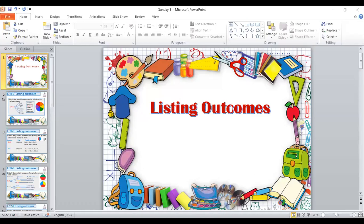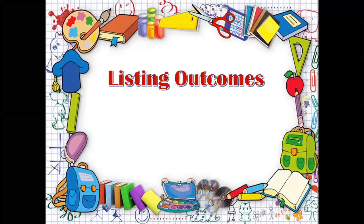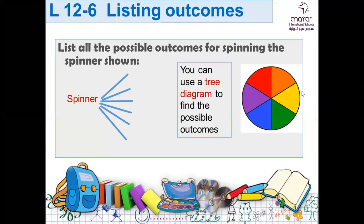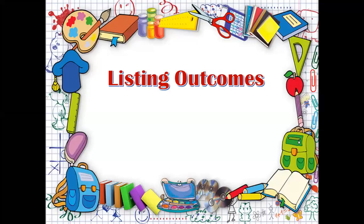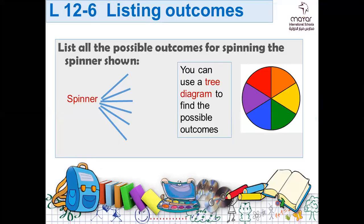Listing outcomes. Let's see what we mean. If I ask you to list all the possible outcomes for spinning the spinner shown, who can tell me what outcomes could we have if we spin this spinner?